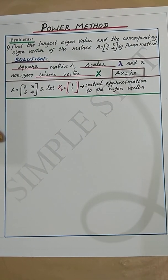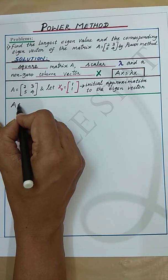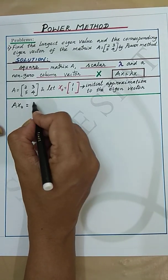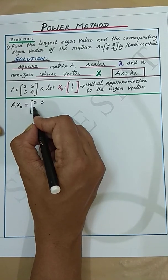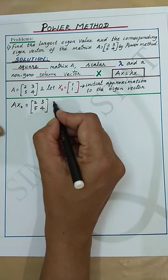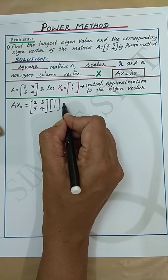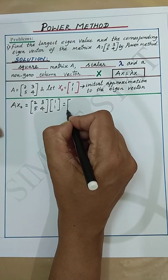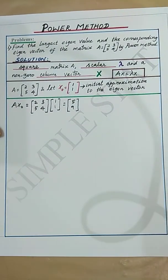Let's now proceed with the iteration process. Now, A into X0 gives A is the given square matrix which is [2 3; 5 4] into X0 which is [1; 1]. Multiplying these two matrices we get [5; 9] as the resulting matrix.